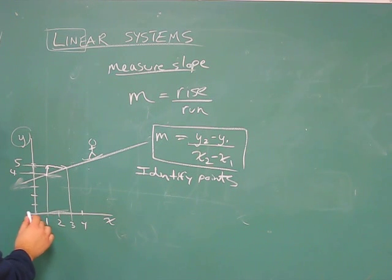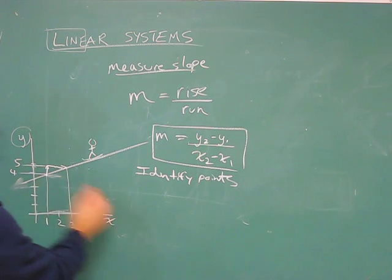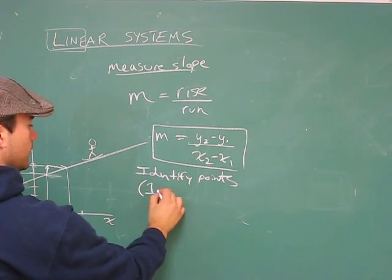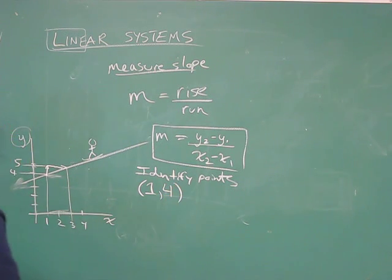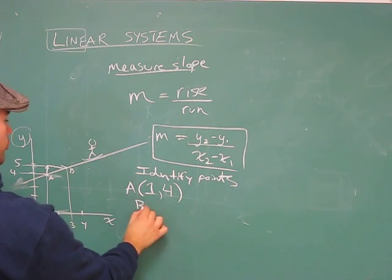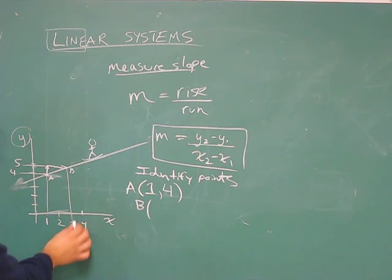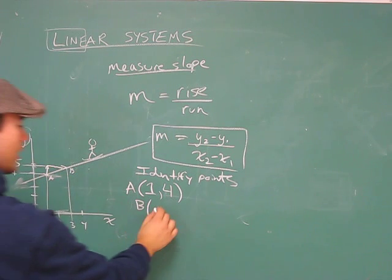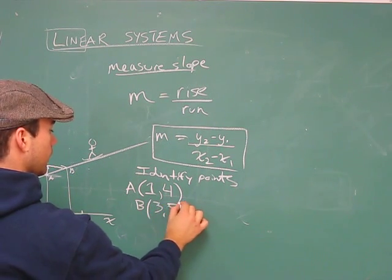Because then we'll know what is what. We have a point here. The X value is one, the Y value is four. So we have point A at (1,4). And we have point B, which is an X value of three and a Y value of five at (3,5).